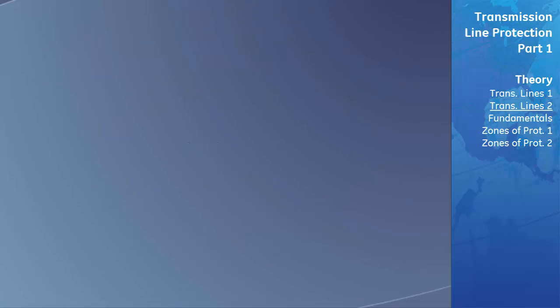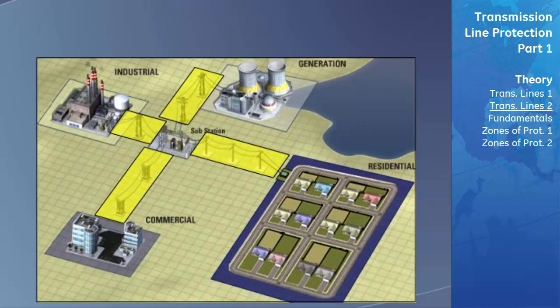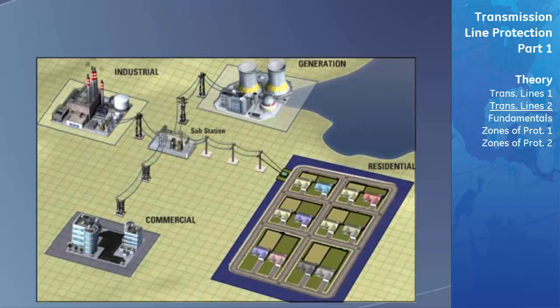The importance of transmission lines in a power system is quite evident. They are responsible for transmitting large amounts of current at possibly very high voltages. If a fault occurs on a transmission line and it is not cleared properly and quickly, the stability of the entire system can be compromised. The longer that the fault is allowed to remain on the line, the higher the possibility that the system will become unstable and possibly collapse.